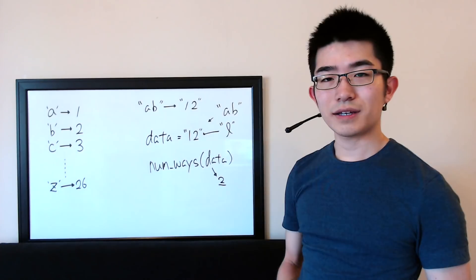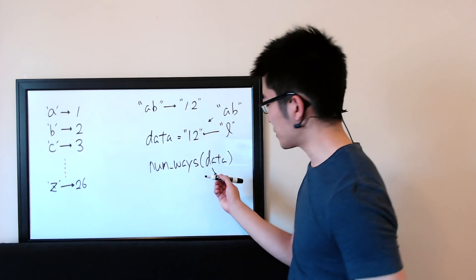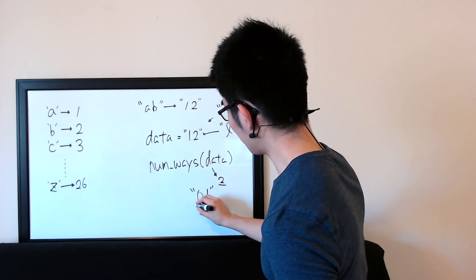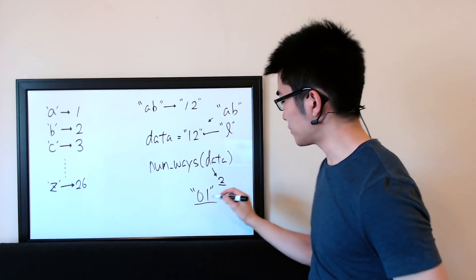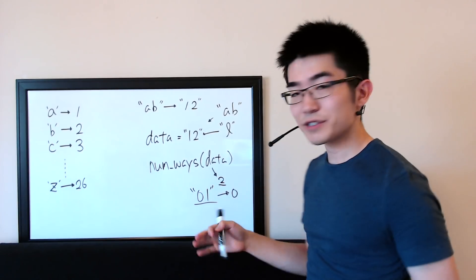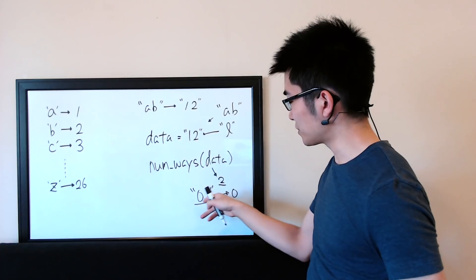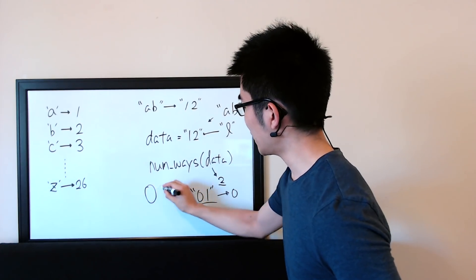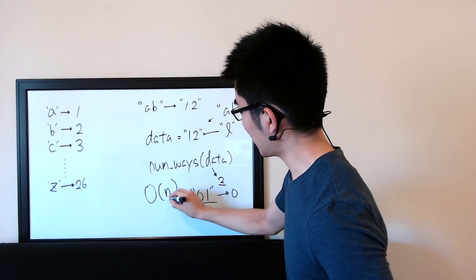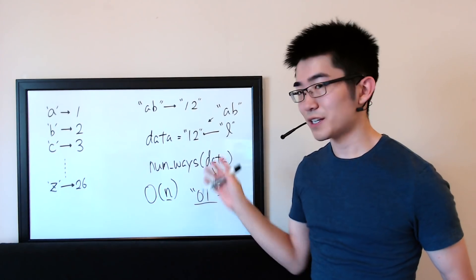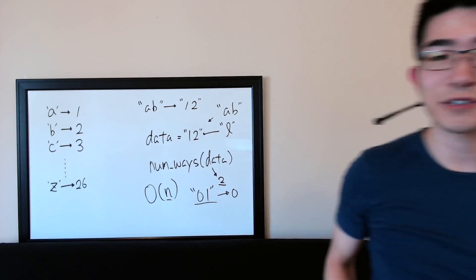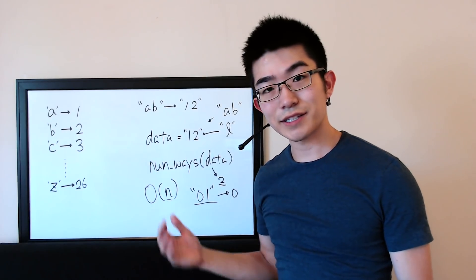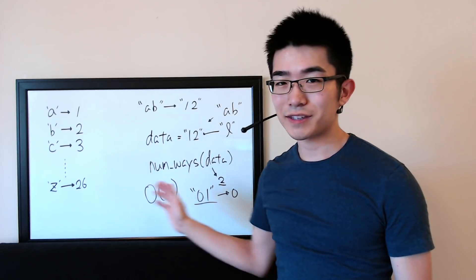There are two possible messages that can be encoded into '12'. One is 'AB' as we saw, and the other is just 'L', because L maps to 12. And if you're given '01' as the data, your function should return 0, because there's no message that maps to '01'. Try solving this problem in O(n) time, where n is the number of letters in the given string. For simplicity, you can assume the data string contains only digits between 0 and 9.